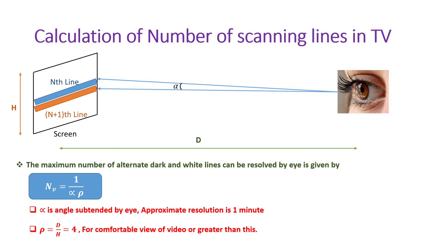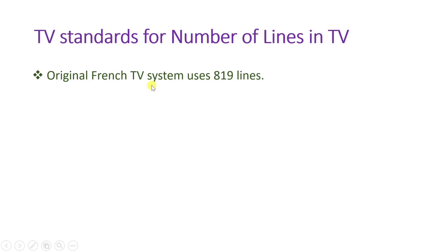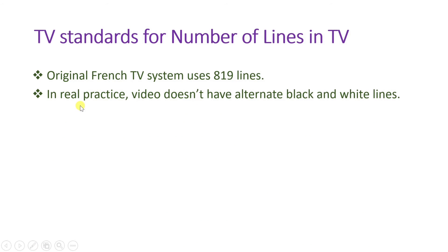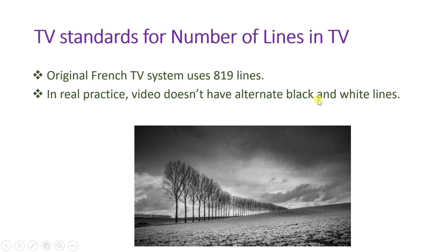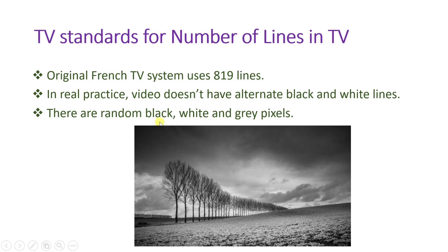Looking at TV standards: the original French TV system uses 819 lines, which aligns closely with our calculated 860 lines for proper resolution. However, in real practice, video doesn't have only alternate black and white lines — it has a random combination of black, white, and gray pixels.